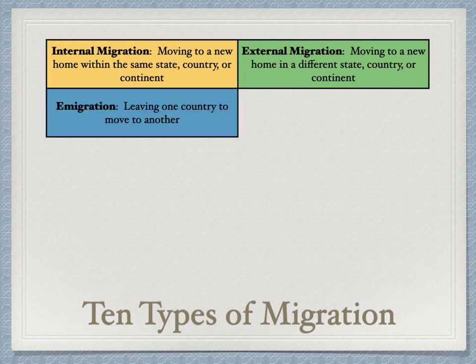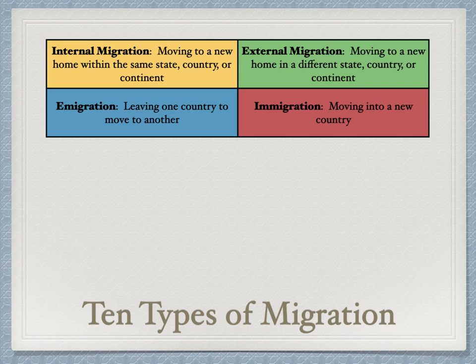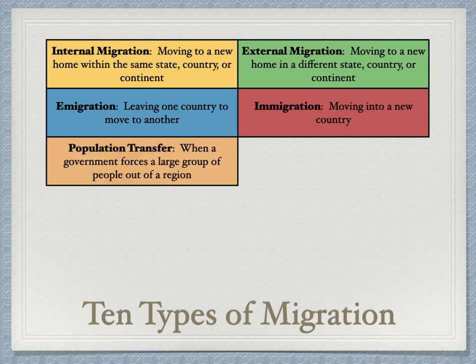Emigration is leaving one country to move to another — you should know that term for your exam. Immigration means moving into a new country — another term you should know. Population transfer is when the government forces a large group of people out of a region. In U.S. history, we saw this with the Trail of Tears, when Native Americans were forcibly moved from their homeland to Oklahoma Territory.